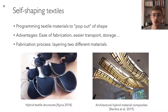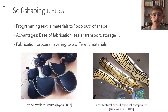Here are two architectural examples: a sunshading structure by Kissia and a suspended ceiling by Burdos and their colleagues. These examples demonstrate that even though we focused on fabricating small-scale architectural models, it is possible to create larger structures.